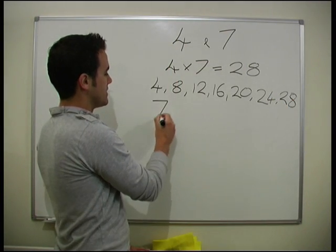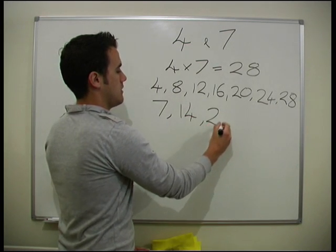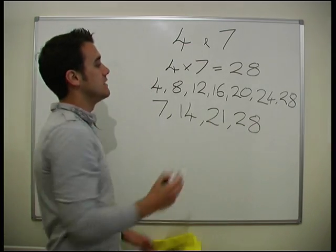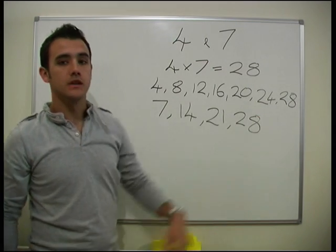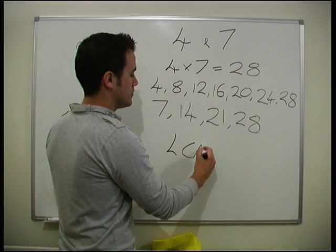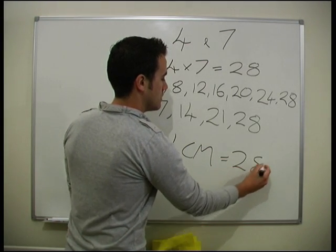And now for 7. 7, 14, 21, and 28. And we can see they don't share any numbers other than 28. Therefore 28, so the lowest common multiple is therefore 28.